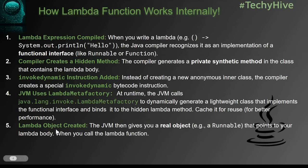Finally, a lambda object is created. The JVM gives you a real object of that class, and you can then call the method on that class — which is the lambda function. This means anonymous classes and functional interfaces are two different things, so never confuse them.